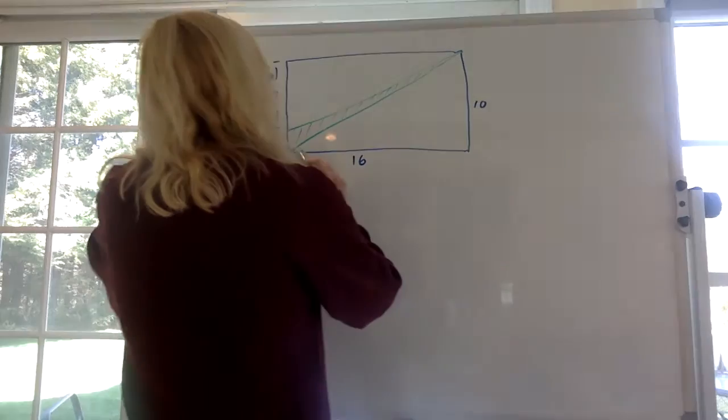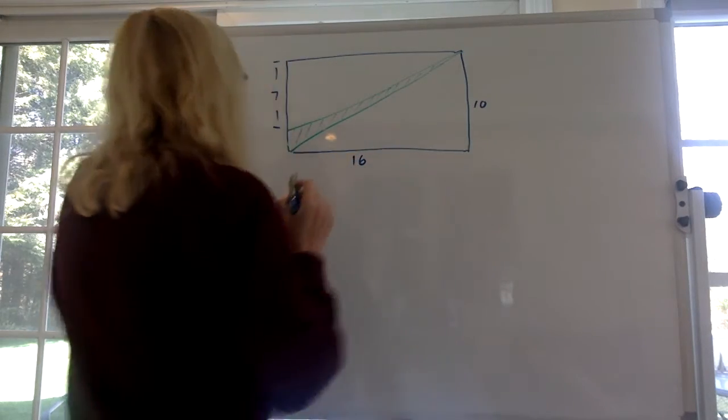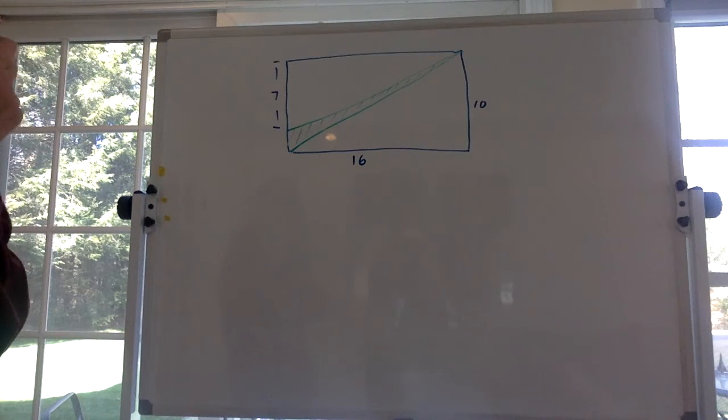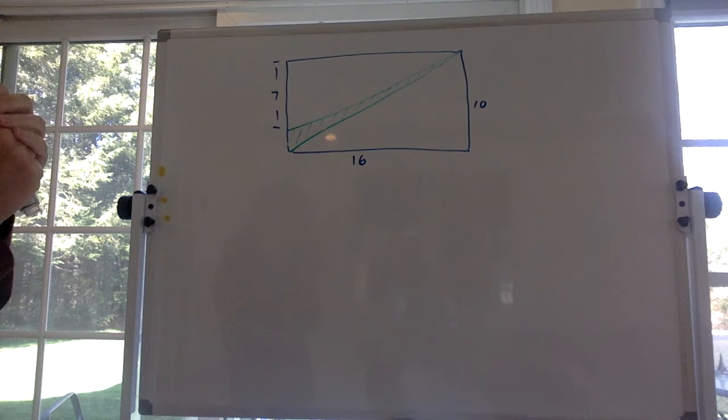But we know from here to here it's 16, from here to here it's 10, from here to here it's 7. So we gotta figure out what's the best way to find this. I'm gonna try two different ways.